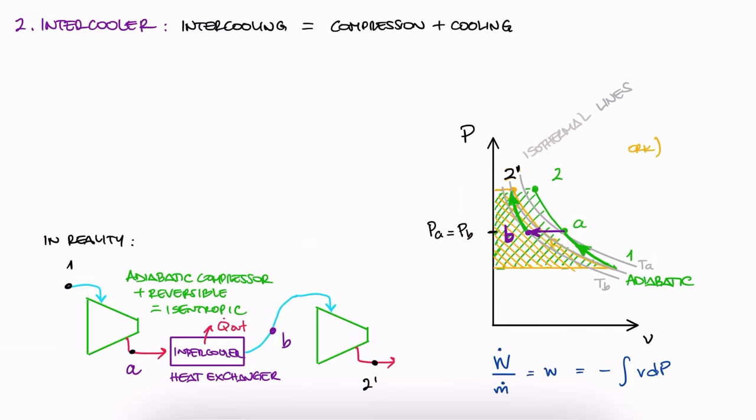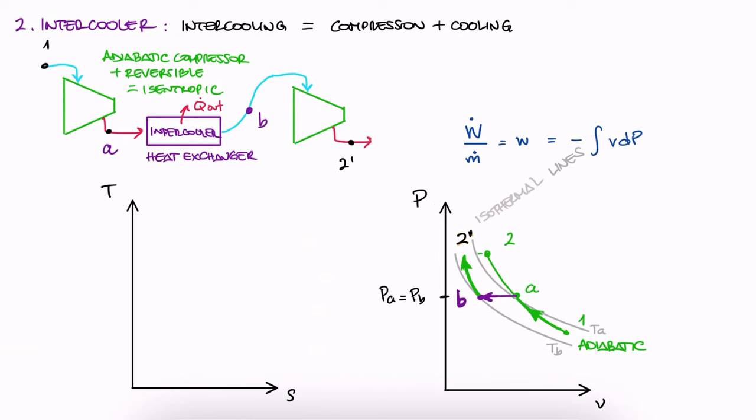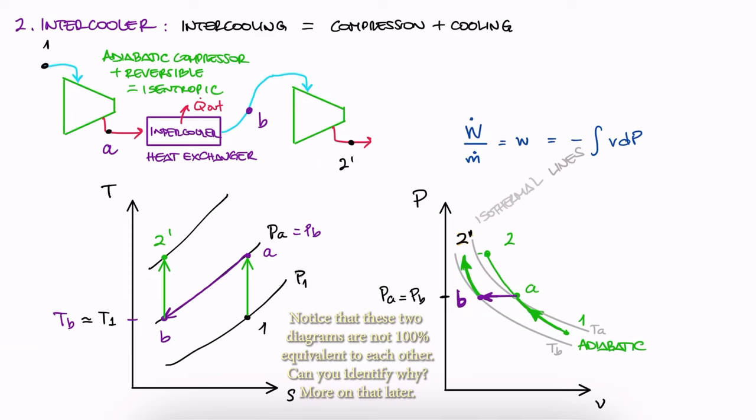If we go back to the TS diagram that we were using to describe Brayton cycles, notice that we need 3 constant pressure lines now, not just 2 like we did before. From 1 to A, we have an isentropic compression to the pressure at the intercooler. From A to B, we stay on the same pressure line, and usually, although not necessarily, we try to drop to the same temperature we had at 1, and then we compress isentropically once more to state 2 prime. And again, usually but not necessarily to a temperature equal to the temperature at A.